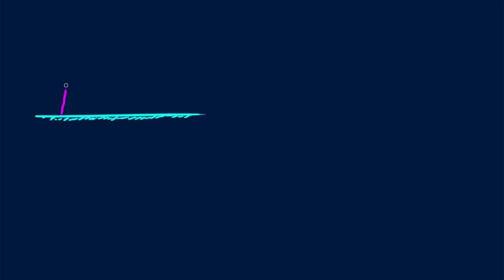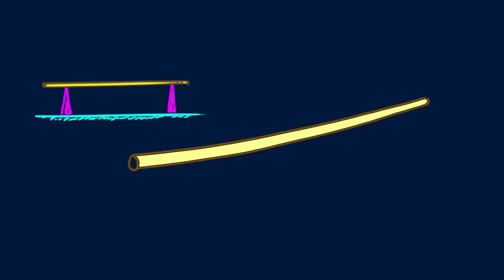You can support a toothpick horizontally at its ends and notice no sag. But support an entire tree trunk of the same wood horizontally at its ends and you'll notice an appreciable sag. Relative to its weight, the toothpick is much stronger than the tree.